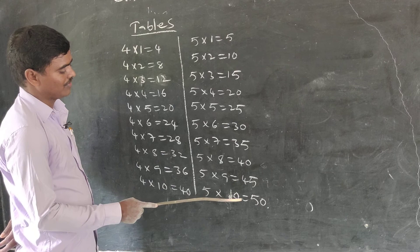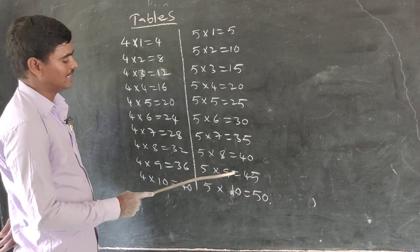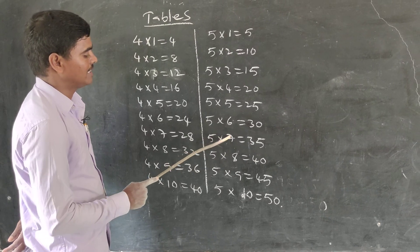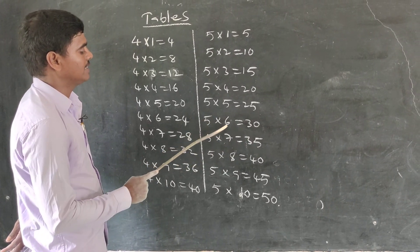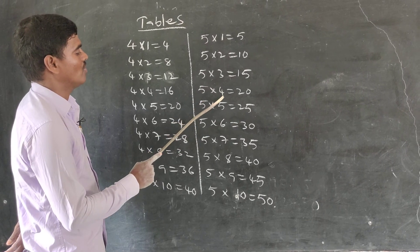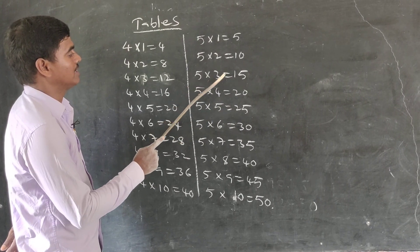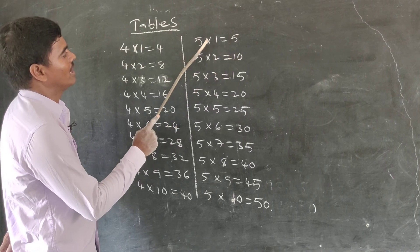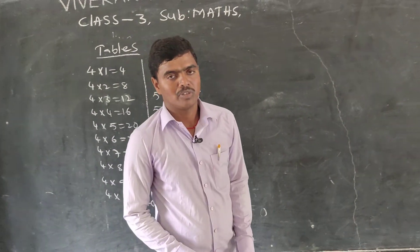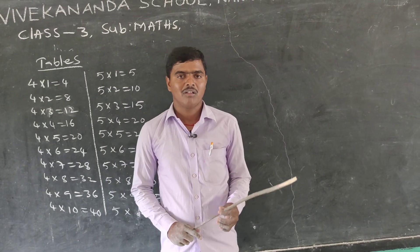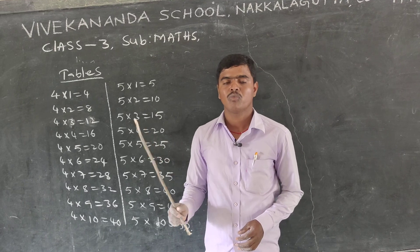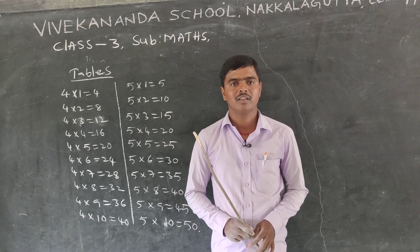Now reverse order: 5 tens are 50, 5 nines are 45, 5 eights are 40, 5 sevens are 35, 5 sixes are 30, 5 fives are 25, 5 fours are 20, 5 threes are 15, 5 twos are 10, 5 ones are 5. Every student, do the worksheet and learn the 4 and 5 tables. Thank you.